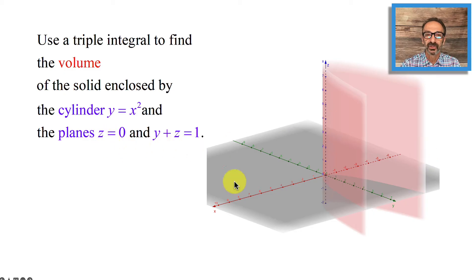Now z equals zero is simple, which is the xy-plane. And now we need to see y plus z equals one, which is a plane, but how do you graph it? How do you visualize it?